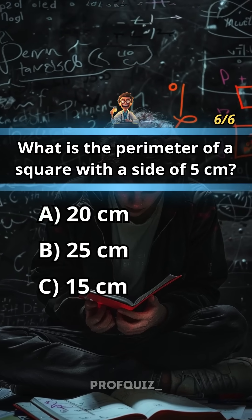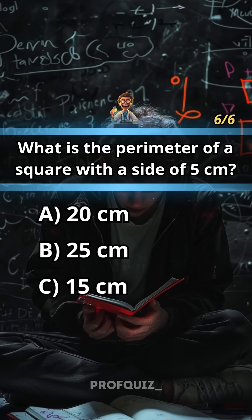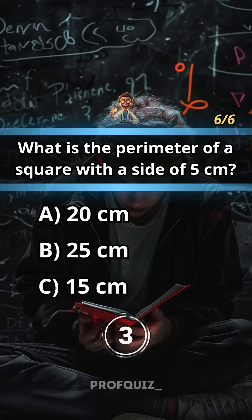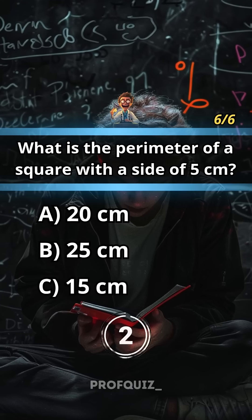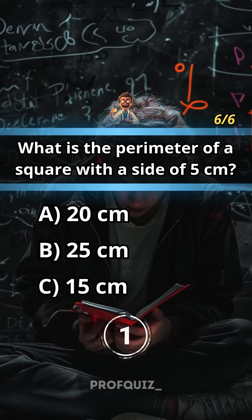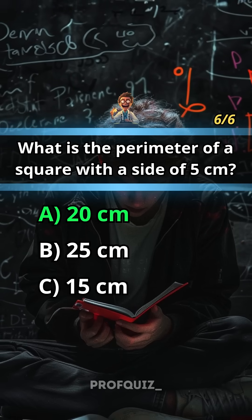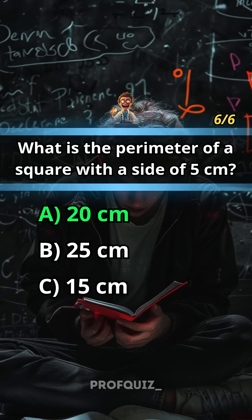What is the perimeter of a square with a side of 5 centimeters? Answer: A, 20 centimeters. Share your score in the comments.